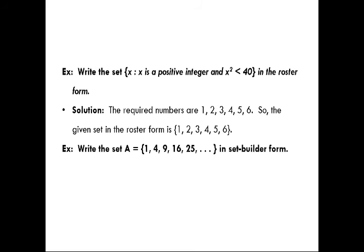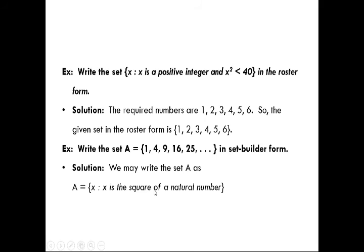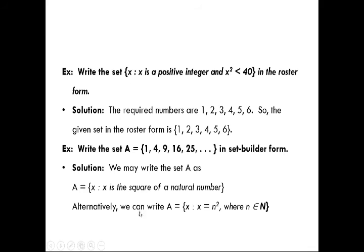Another example: write the set A = {1, 4, 9, 16, ...} in set builder form. The logic here is that these are perfect squares of natural numbers, so in set builder form: A = {x : x is the square of a natural number}. Alternatively, we can write A = {x : x = n², where n ∈ ℕ}.